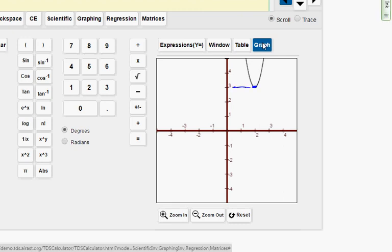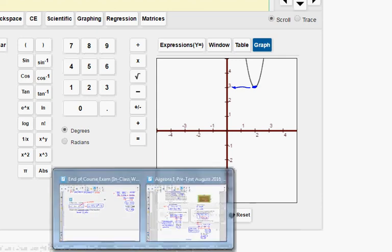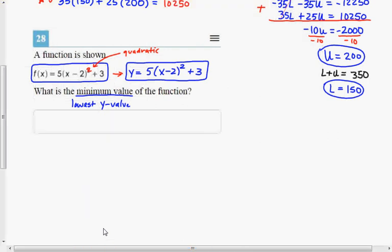All right, I would say this lowest value here corresponds with 3 on my y-axis, so the lowest value, the minimum value of this function is 3. It's that easy. All right, I'm going to draw a quick sketch of that. Again, using the technology you can see 3 is the lowest value of the function. All right, that is it, it is finished.